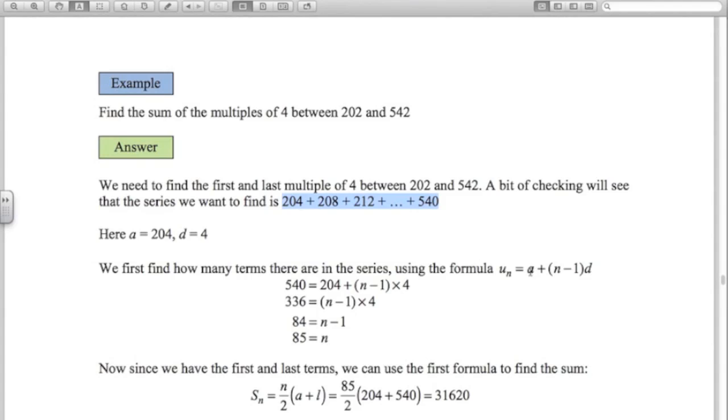The way I've done it is I've used the formula for the nth term. So the nth term here is 540, first term 204, n we don't know, and the common difference is 4. Substituting that into the formula, subtracting 204, dividing by 4, and then adding 1, there's 85 terms in that sequence.